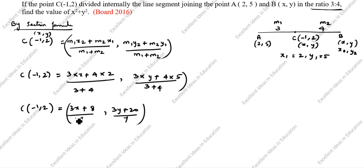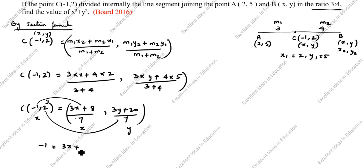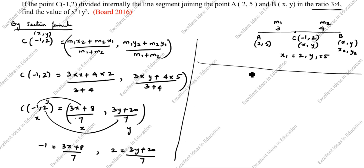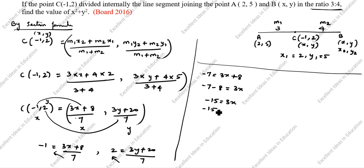Now we find X and Y by comparing components. For X: -1 = (3X + 8) / 7. Cross-multiplying: -7 = 3X + 8, so -7 - 8 = 3X, giving -15 = 3X, therefore X = -15/3 = -5.